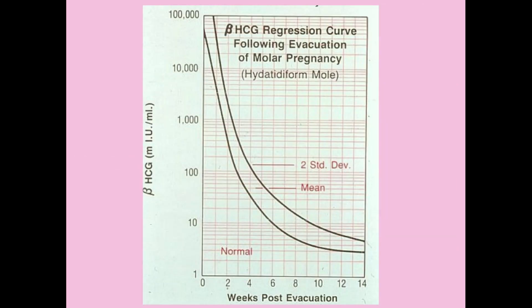What happens if we are following up a woman after D&C and her HCG is declining — from 100,000 to 12,000 at week one, 1,000 at week two, 200 at week three, 80 at week four — but then at weeks five and six we see a plateau? And then the level actually goes back up? What does this mean? She was going along just fine, and now her HCG is rising again. We will talk about this in the next section on malignant gestational trophoblastic disease.